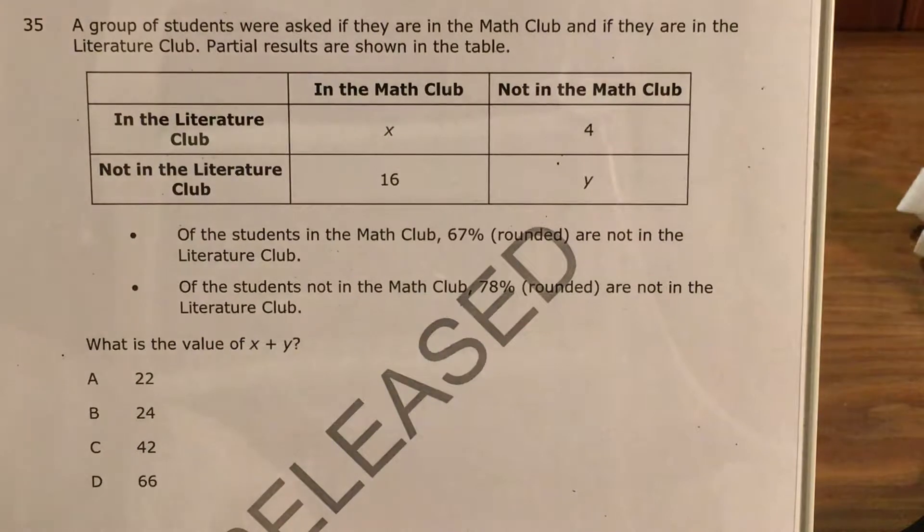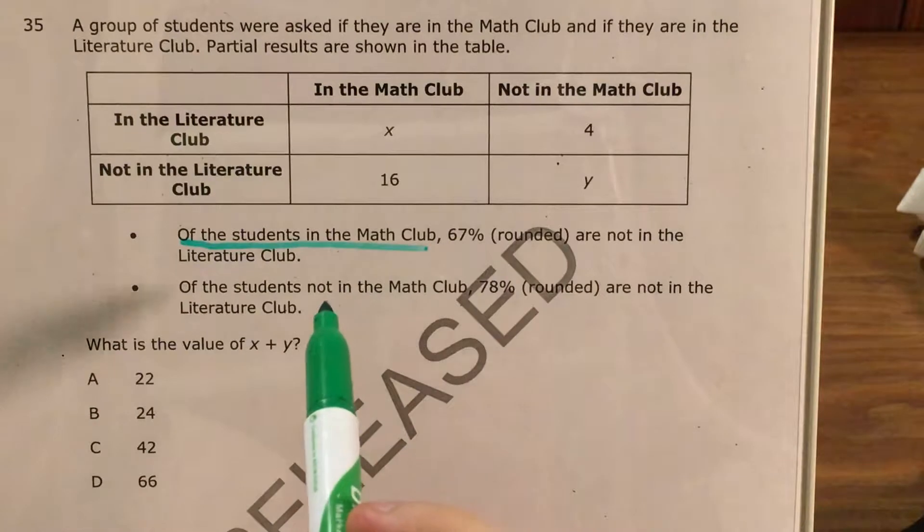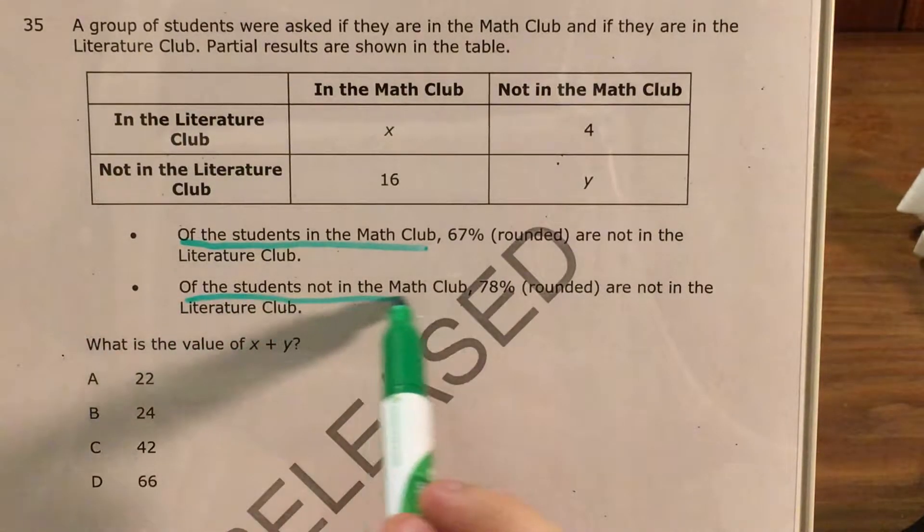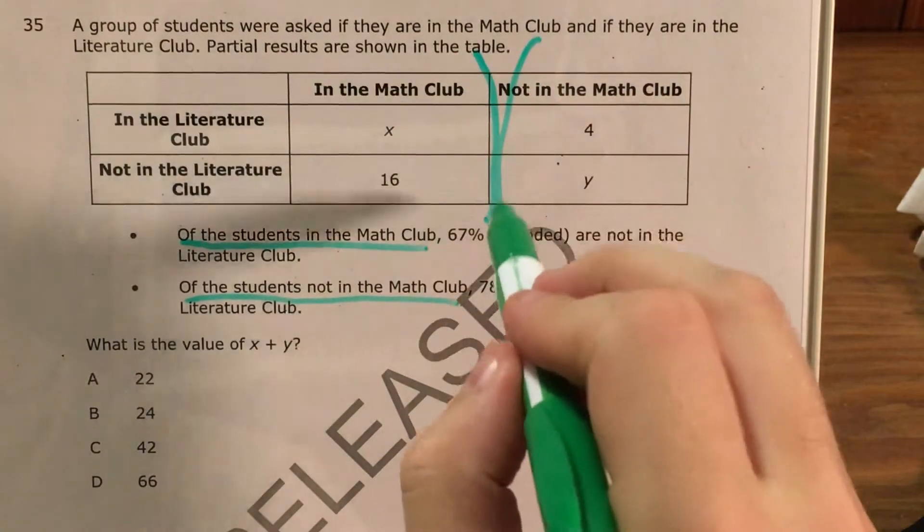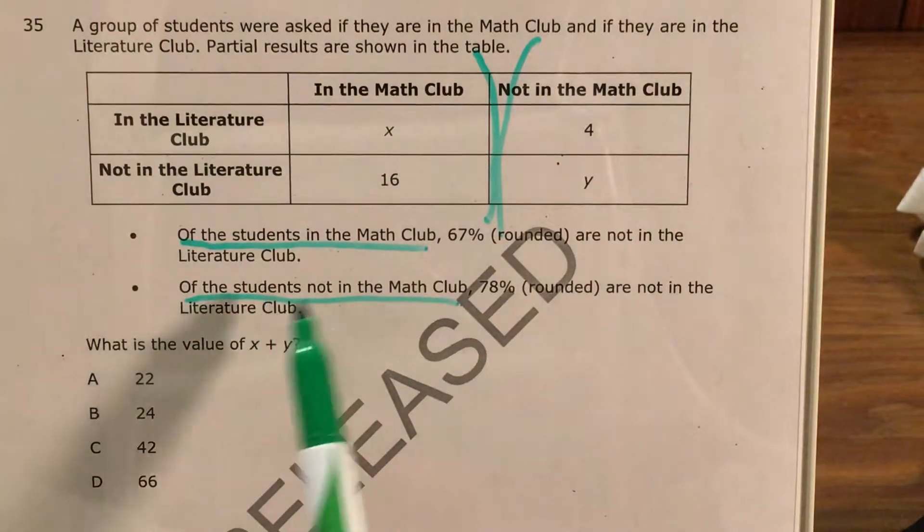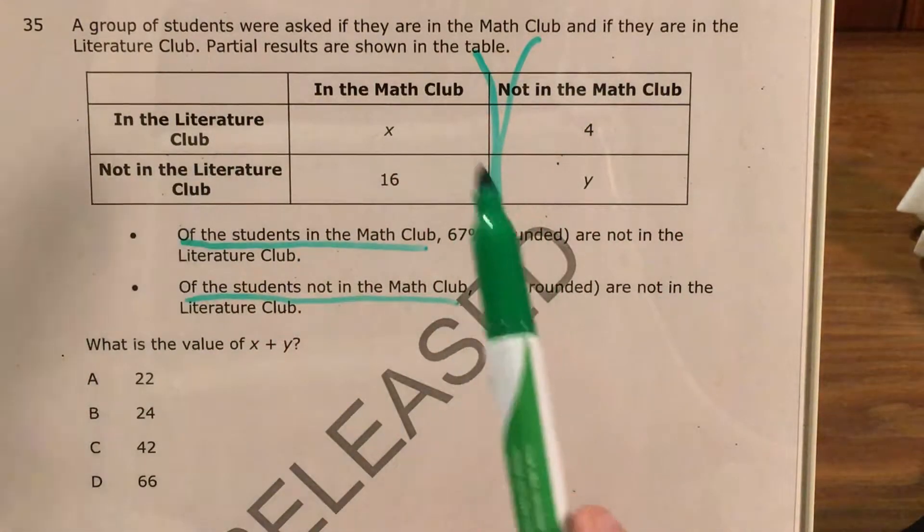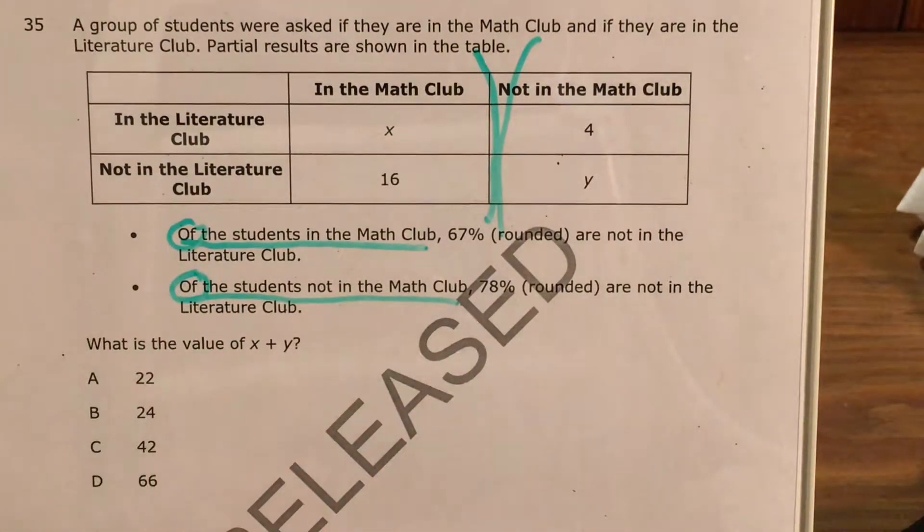All right, so let's get started with how we're going to read one of these. First thing I see is that this bullet point says of the students in the math club and this one says of the students not in the math club. What that tells me is that I'm going to treat these two columns separately because I'm only worried about the students in the math club for one column, and I'm only worried about the students not in the math club for the other column, and I know this because I see the word of, and of tells us what to focus on.